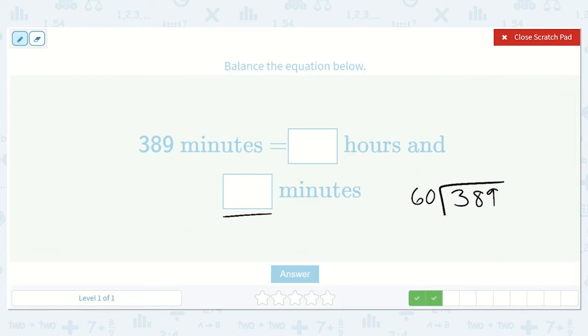So six times six is 36. So six times 60 would be 360. Nine minus zero is nine, eight minus six is two, and then three minus three is zero. So there were 29 minutes left over. So that was six hours and 29 minutes.